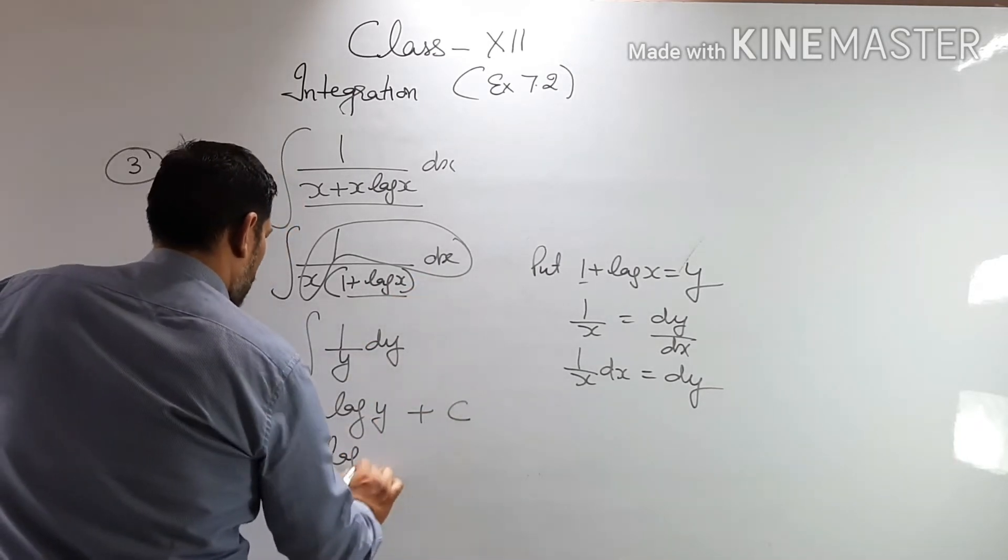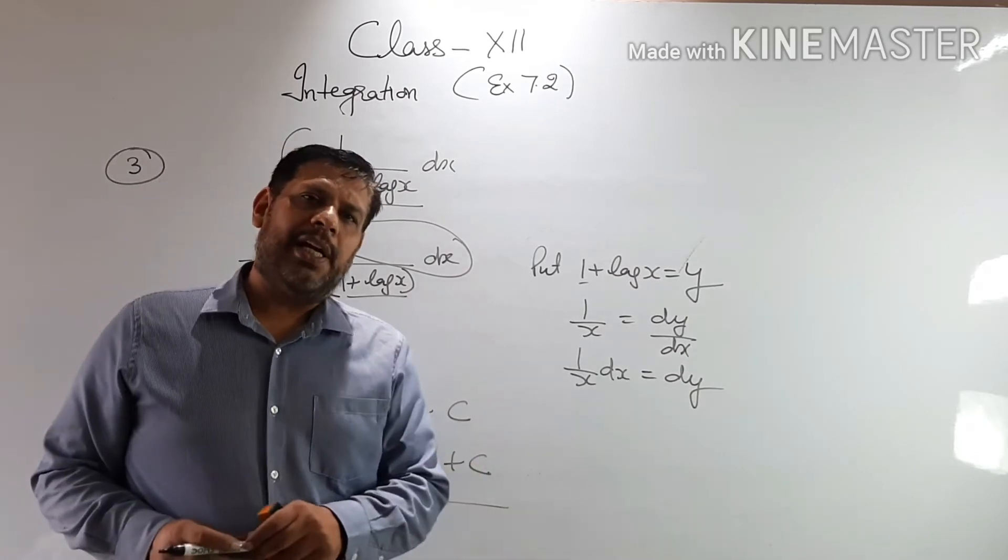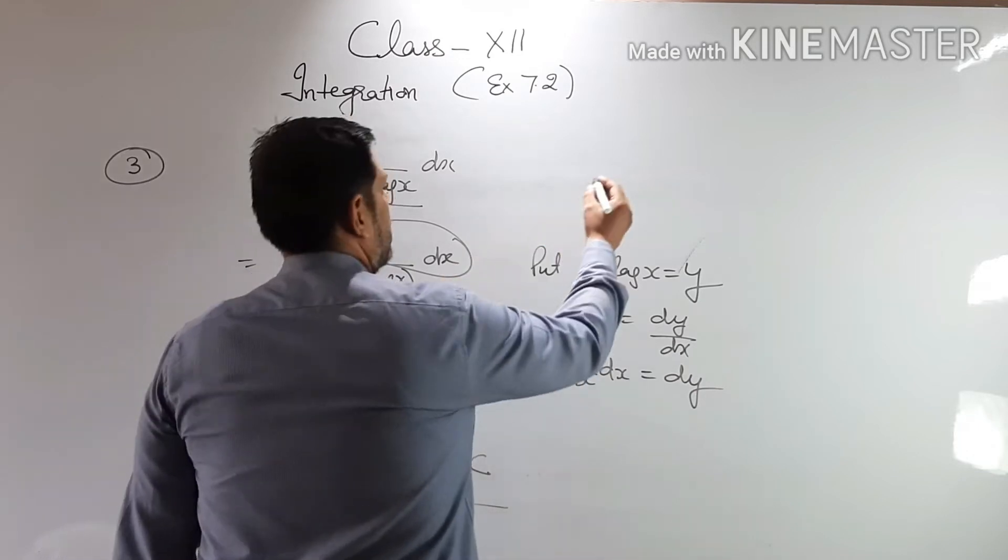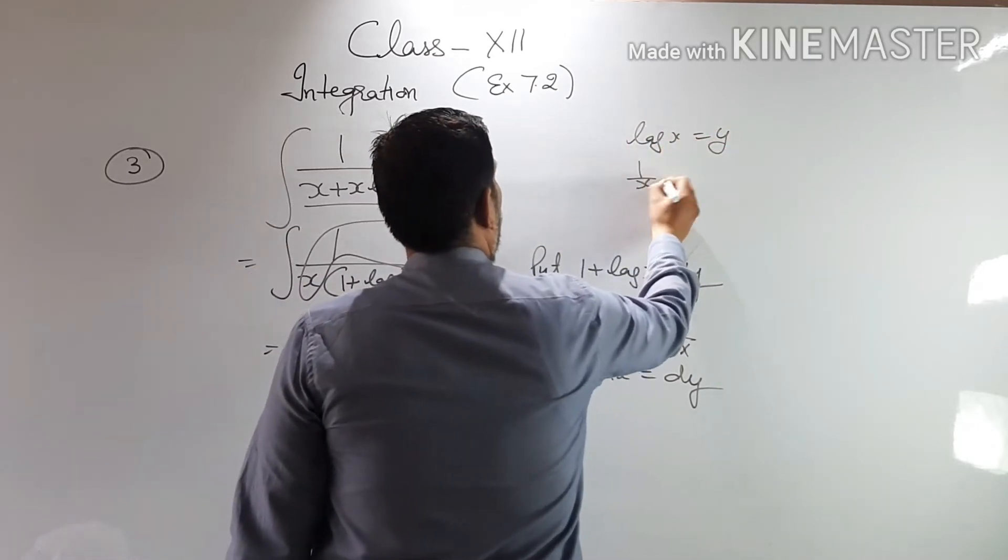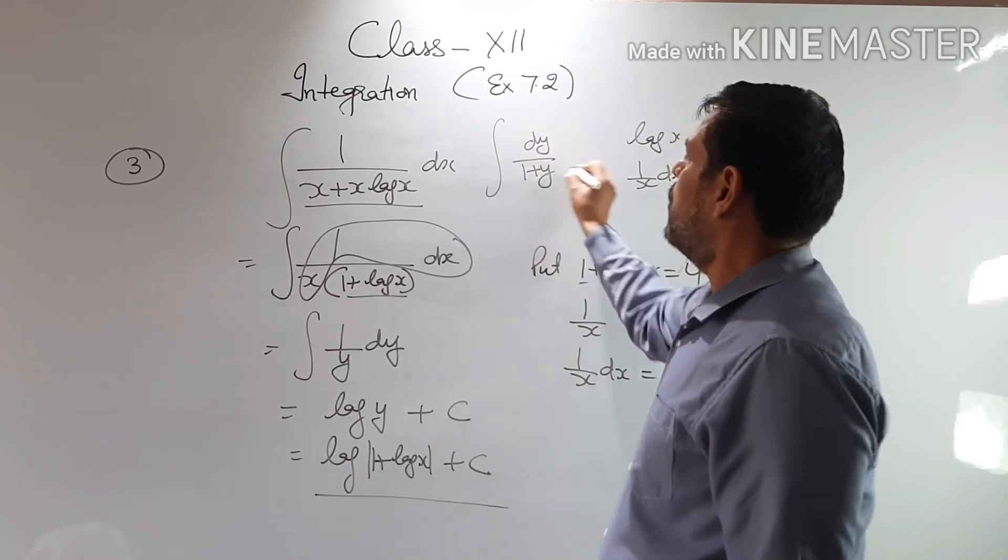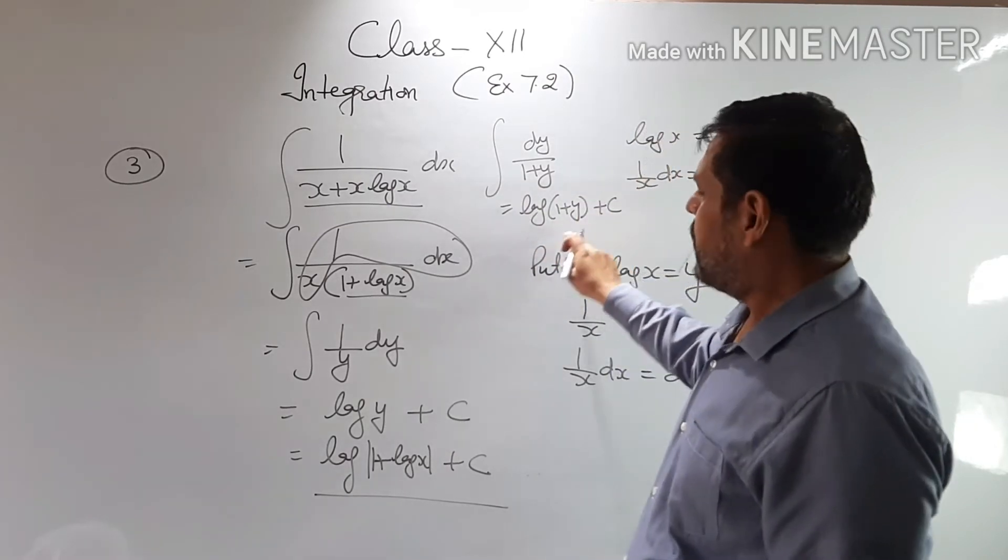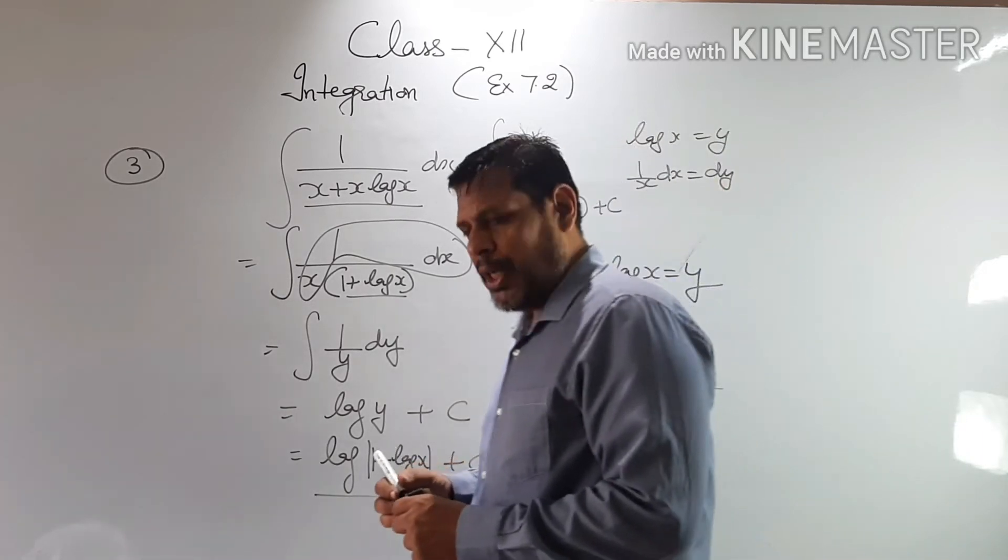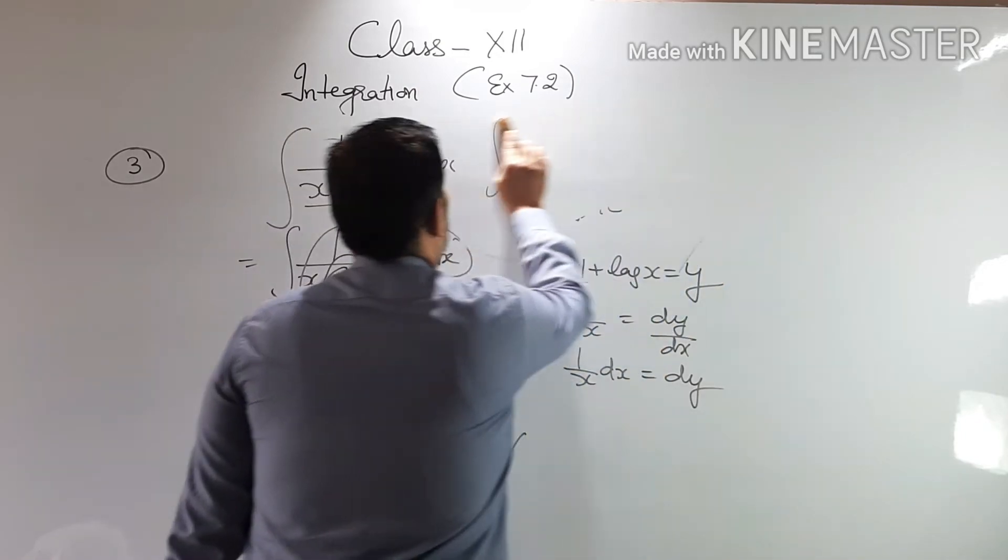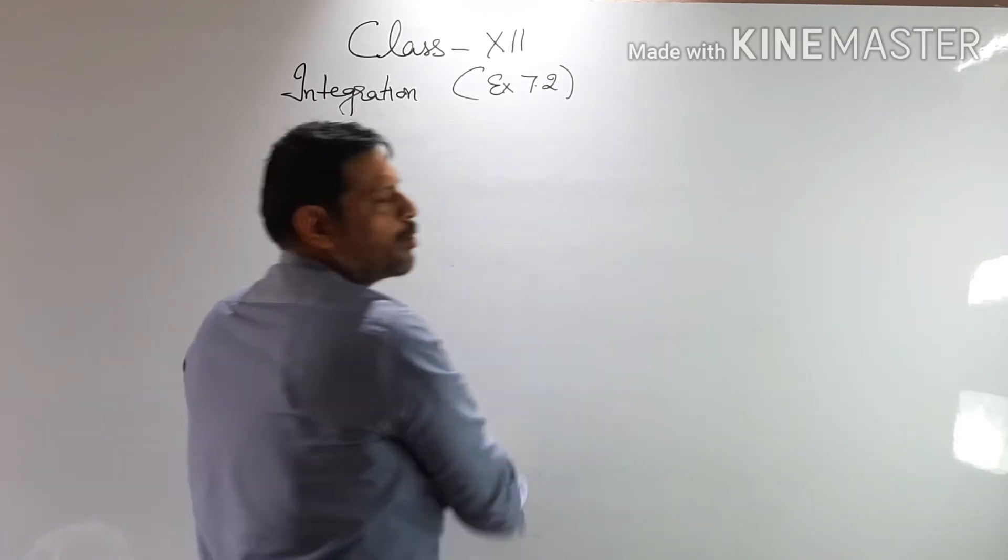And its integration is log of y plus c. But y is 1 plus log x. So it's log of 1 plus log x plus c. Now sometimes students say sir, our answers come different. How can answers be different? Suppose someone put only log x instead of 1 plus log x. So if in this question someone puts only log x as y, then 1 by x dx would have come as dy and this question would become dy upon 1 plus y. So 1 plus y, what will come? Answer will be log of 1 plus y plus c. You put y back, you'll get the same answer. So no tension. Answers can be a little bit different and you can put values differently according to you, whatever seems easy to you at that time. That doesn't make any difference.